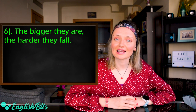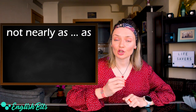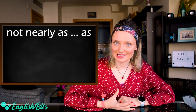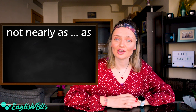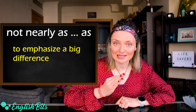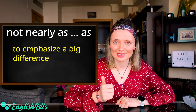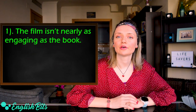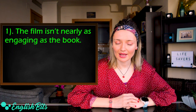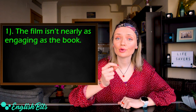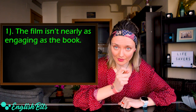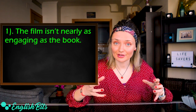Now let's move on to our second structure, which is 'not nearly as + adjective + as.' We use this structure to show and emphasize a big difference. The first example: the film isn't nearly as engaging as the book — it means that the book is much more engaging than the film, so we show a big difference.